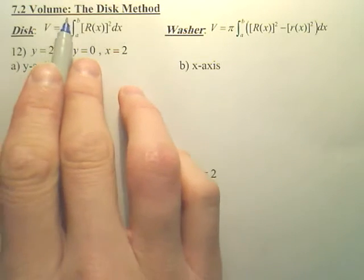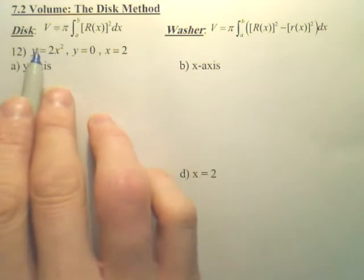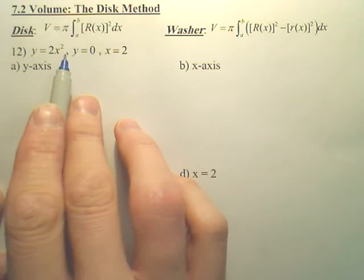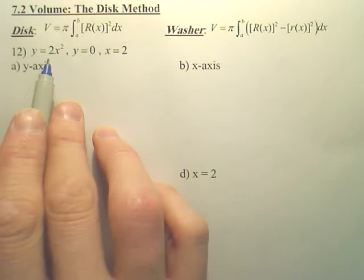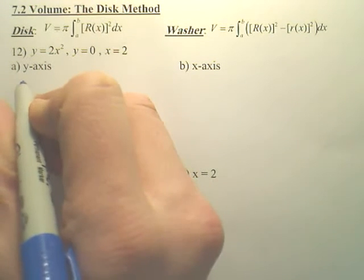Okay, if I want to find the volume using the disk method of the shape that's in the region engulfed by these three graphs, I want to find it and revolve it around the y-axis. The first thing that helps is to sketch it. Very important and usually very helpful to sketch it, or at least to think about what it's going to look like.